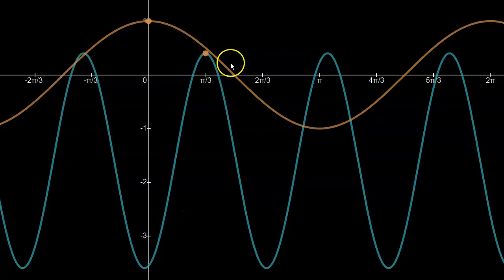In this case we would say that the c value is pi over 3 radians. So in your equation it would look like cos bracket x minus pi over 3.